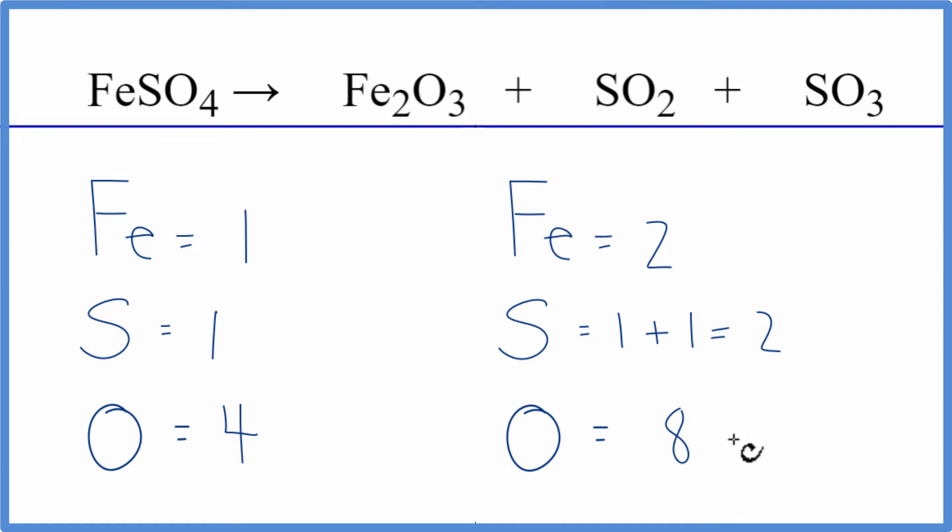It looks like we need to double the iron here, double the sulfur, and we need to double the oxygen. And we can accomplish that by putting a coefficient of two in front of the FeSO4.